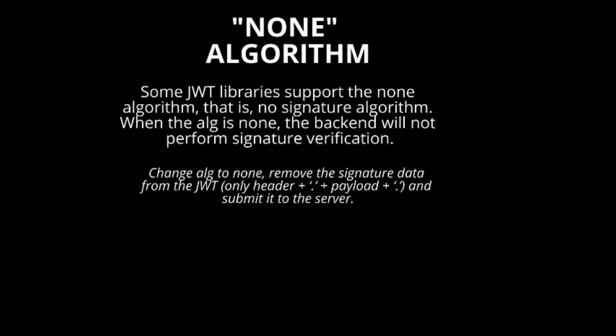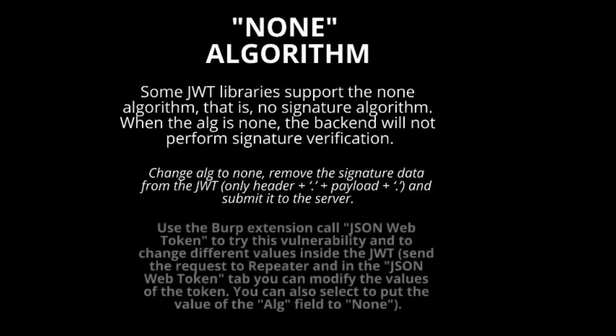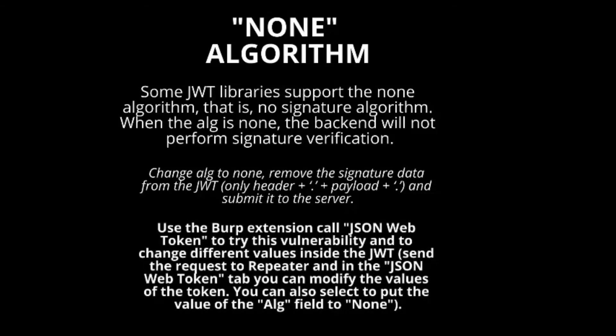Use the Burp extension called JSON Web Token to try this vulnerability and to change different values inside the JWT. Send the request to Repeater, and in the JSON Web Token tab you can modify the values of the token. You can also select to set the value of the alg field to none.